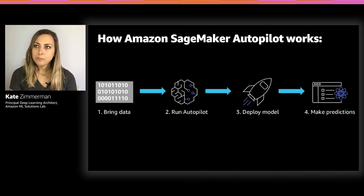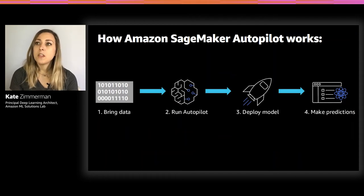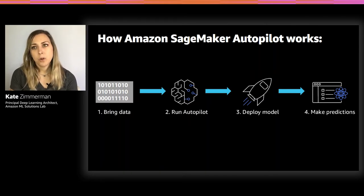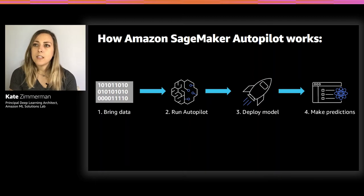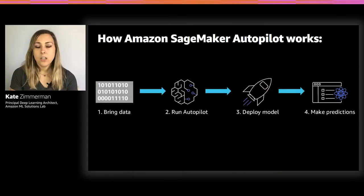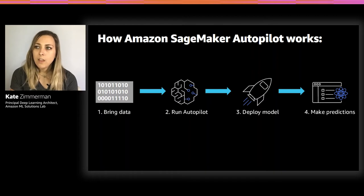At a high level, Autopilot works like this. You provide a tabular data set, then select the target attribute to predict. This attribute can be a number — such as a house price, which is regression — or a category, such as spam or not spam, which is classification. SageMaker Autopilot automatically explores different solutions to find the best model. You can then deploy the model to production with just one click. Autopilot also provides detailed insights about your data and model, such as accuracy on validation and training data sets, and the impact of features on the model's predictions.